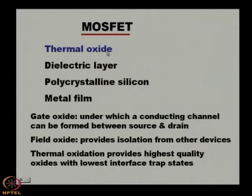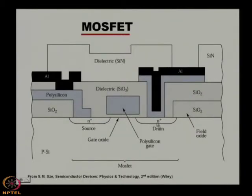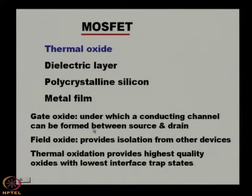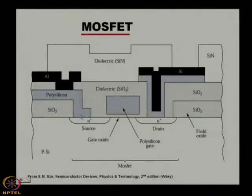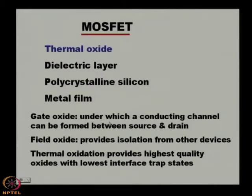Starting from the thermal oxide in a MOSFET, a conducting channel can be formed between source and drain under the dielectric SiO₂. The gate oxide is SiO₂, and the field oxide is another oxide that provides isolation from other devices. Thermal oxidation provides the highest quality oxides with the lowest interface trap states.